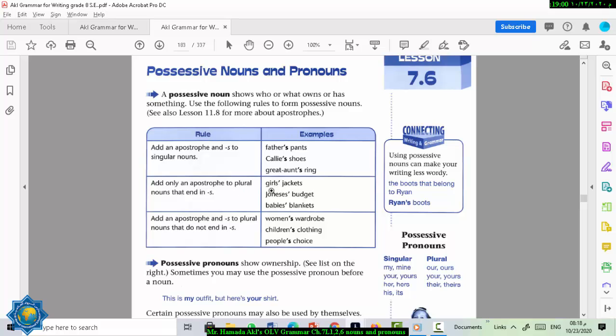But what if the noun is plural like here? Girls. Girls' jackets. Many jackets belong to many girls. So that's plural. The first noun here is plural. That's why. And that noun ends with an S. So you need to put the apostrophe after the S. Jones' budget. Apostrophe S then apostrophe. So I put S then apostrophe. Babies blankets. S then apostrophe.